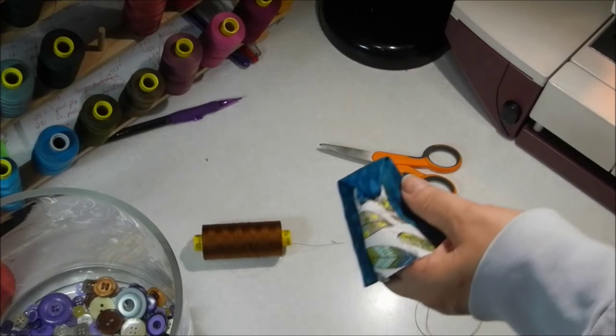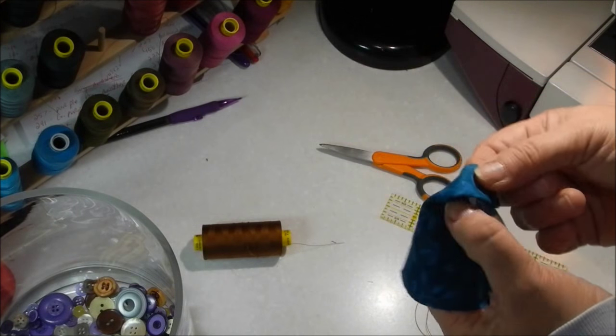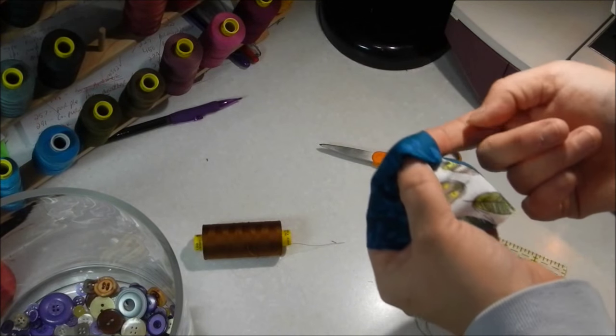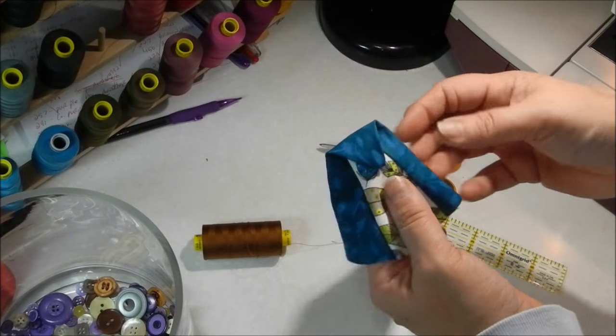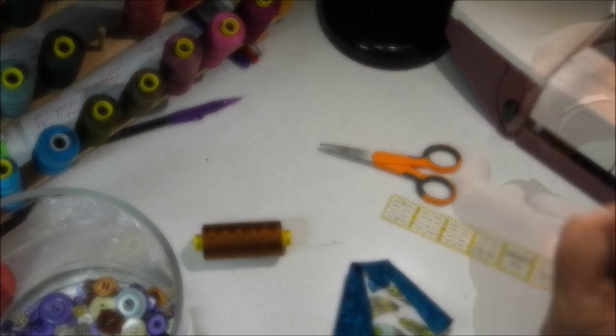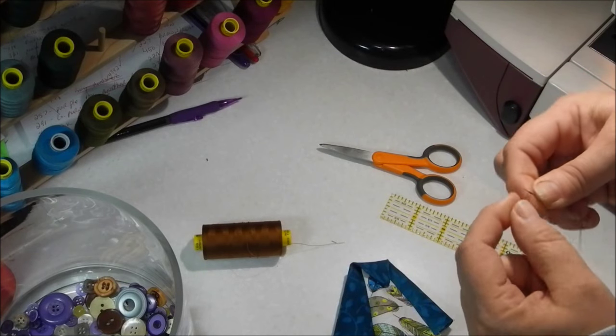Snip the thread. It's okay to leave a tail, you're not going to see it, it's on the inside. Take my pin out, and there his nose is tacked down nicely, his beak. The next step, I'm going to double my thread so that it's strong.